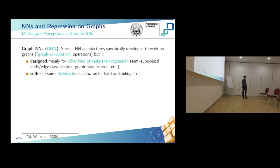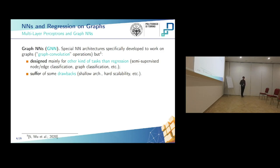We have talked about functions defined on graphs and about neural networks, so we have to talk about graph neural networks. Graph neural networks are special neural network architectures specifically developed to work on graphs, but the ones present in literature were originally designed mainly for tasks other than regression. Indeed, they are mainly designed for semi-supervised node or edge classification and similar tasks. Moreover, they suffer from some drawbacks: they do not work well with deep neural networks, they work well only with shallow architectures, and they also have hard scalability.